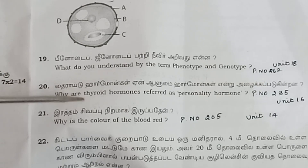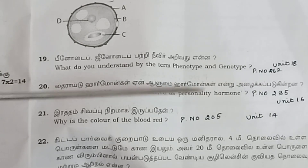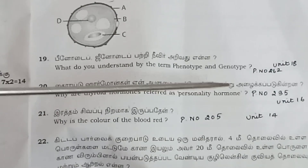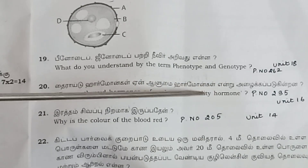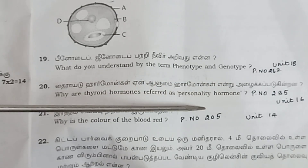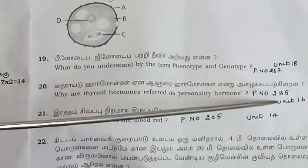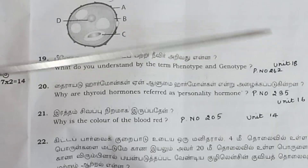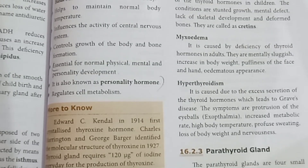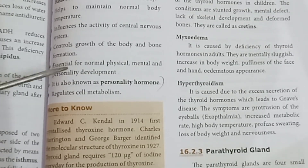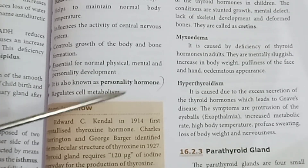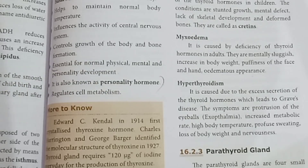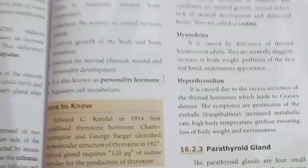Question 20: Why are thyroid hormones referred to as personality hormones? This is an important repeated public exam question. Page number 235, Unit 16. Thyroid hormones are essential and are called personality hormones.